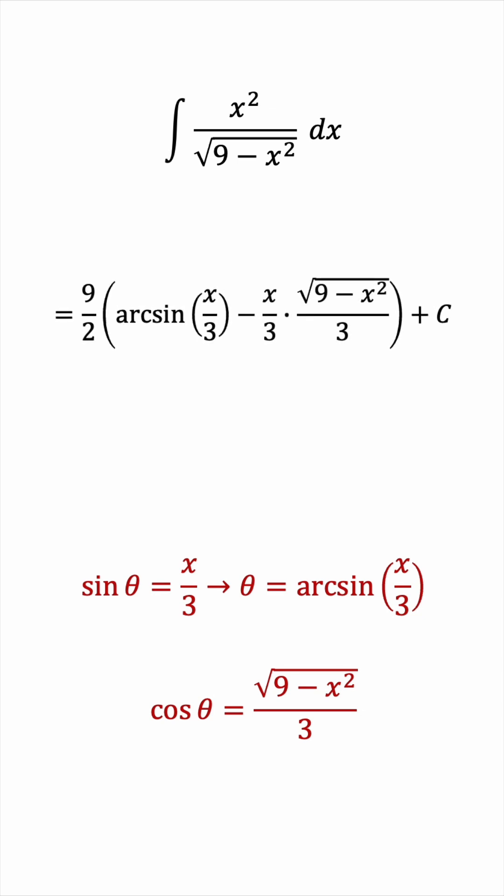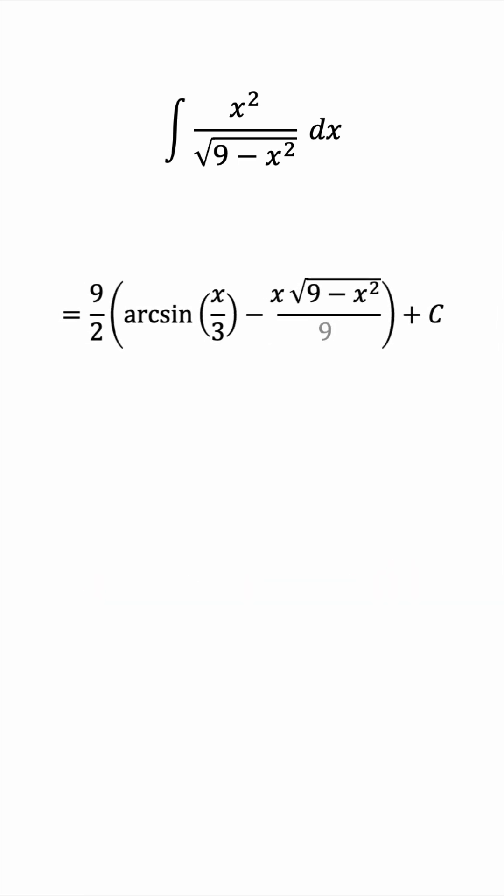We can now simplify this fraction, and then notice we have a 9 outside the brackets, so we can use it to clear the denominator of the fraction inside. This is just an extra step for simplification, but that's the final answer.